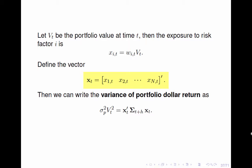Let the boldface Xit denote the vector of the dollar exposures to the N risk factors. Then the variance of the portfolio dollar return is given by the following formula.